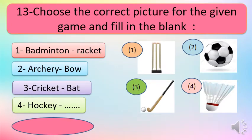Next question: choose the correct picture from the given game and fill in the blank. Some sports-related pictures are given. The games listed are: badminton (played with a racket), archery (bow and arrow), cricket (bat), and hockey — with a blank to fill. Looking at the pictures: number one shows stumps (used in cricket, not hockey); number two shows a football (not related to hockey); number three shows a stick and ball — a hockey stick.